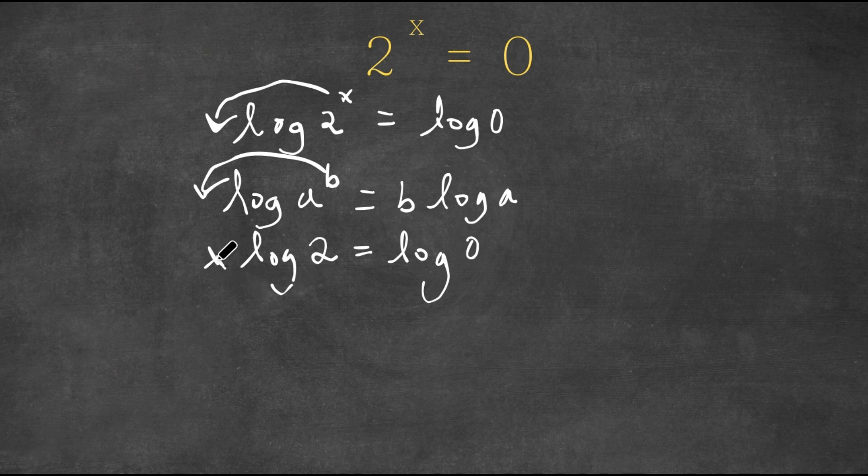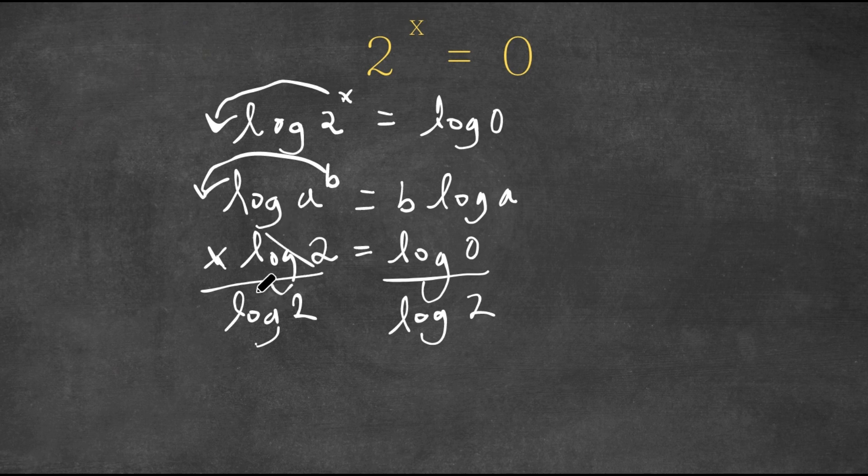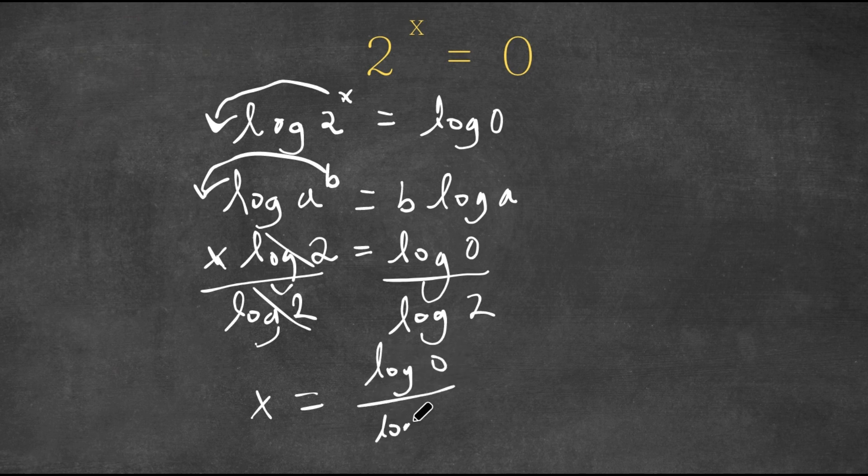Now we want to isolate x, so I'm going to divide both sides by log 2. These two cancel out, and I have x equals log 0 over log 2.